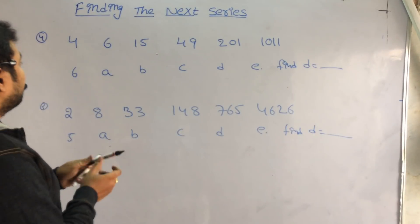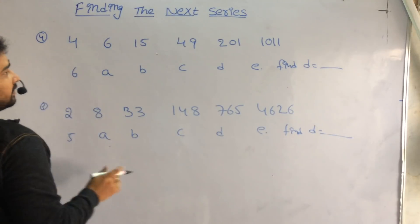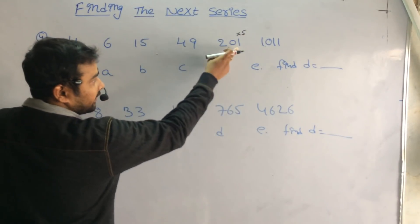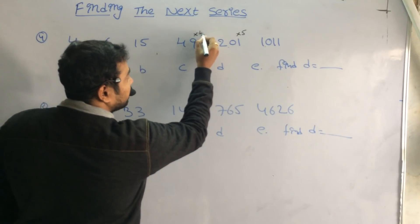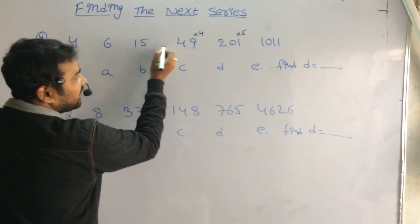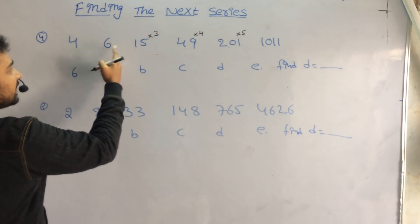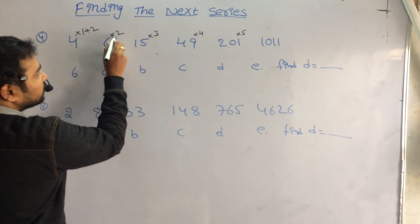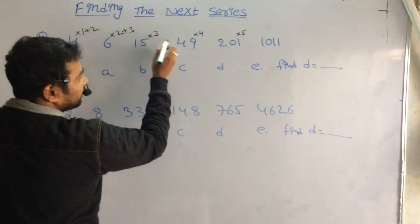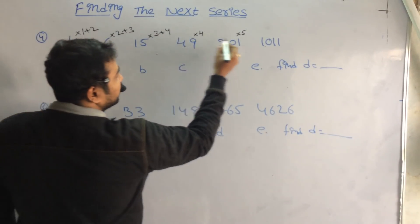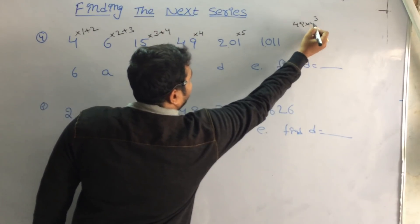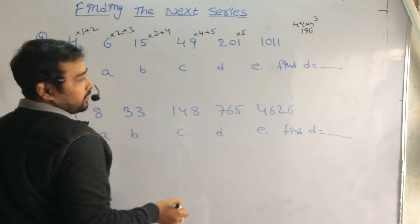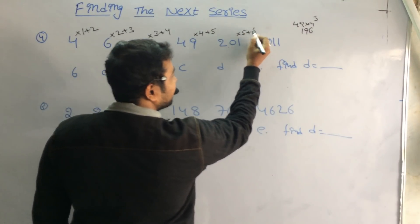Next, the fourth question. I want to find the logic in the first series. It is 200 and 1000 — approximately 5 times. It is 50 and 200 — 4 times. Then 15 and 45 — approximately 3 times. Then 6 and 15 — about 2 times. The pattern is: 4 into 1 plus 2 is 6; 6 into 2 plus 3 is 15; 15 into 3 plus 4 is 49; 49 into 4 is 196 plus 5; then into 5 is 1005 plus 6 is 1011.